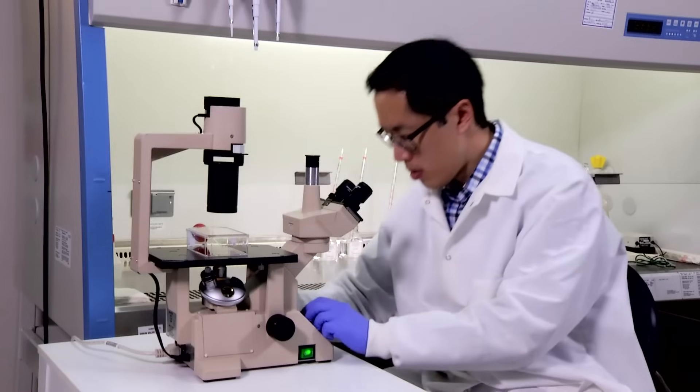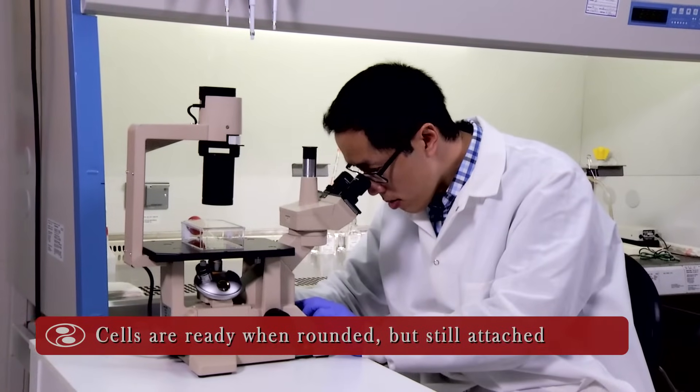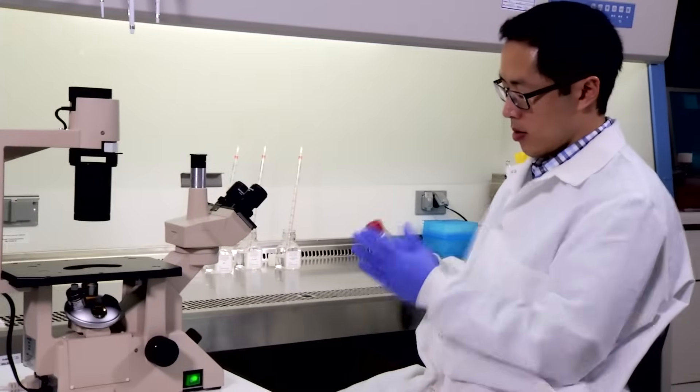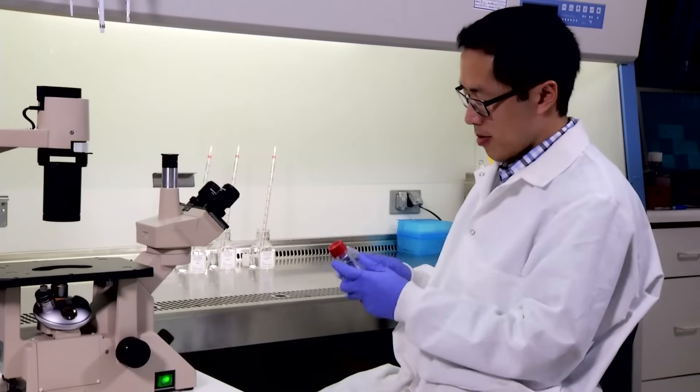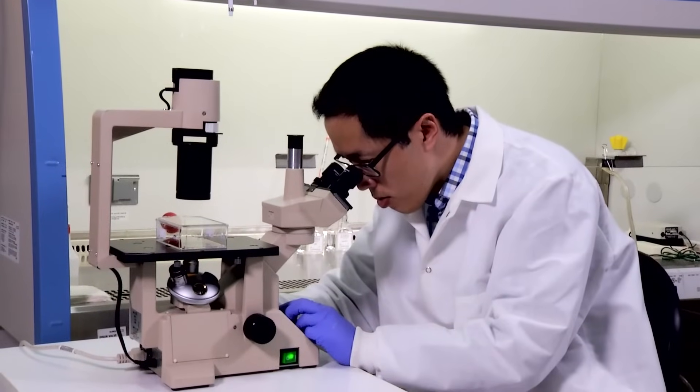Observe cells under microscope. Cells are ready when rounded but still attached. Hit flask against palm to detach cells. Check and detach cells again if needed.